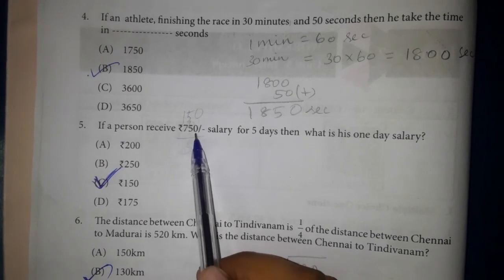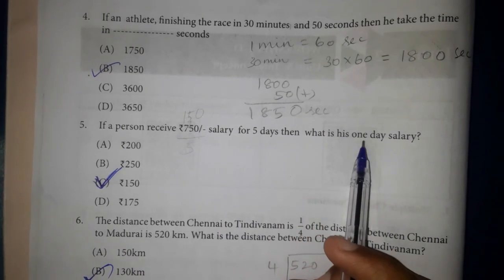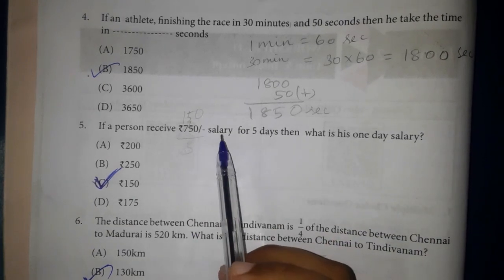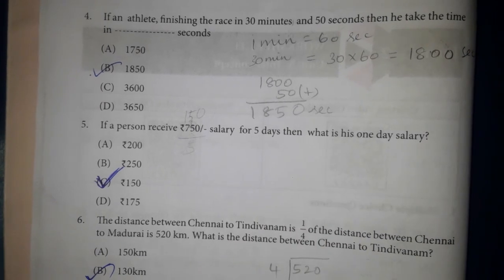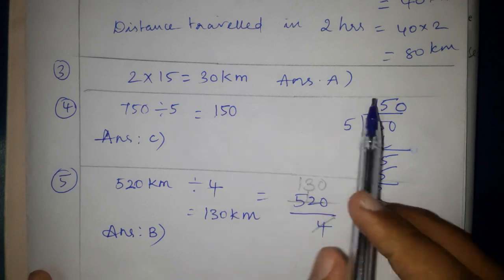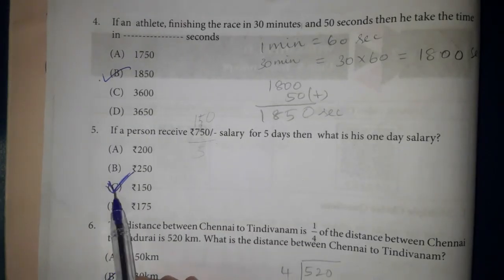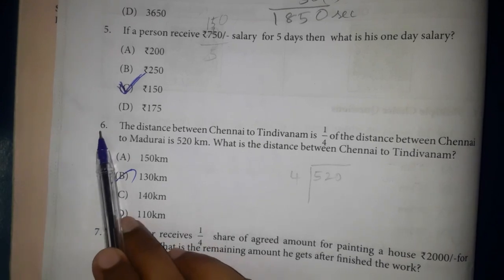Fifth one. If a person receives Rs. 750 salary for 5 days, then what is the 1 day salary? 750 divided by 5. Answer: C, Rs. 150.